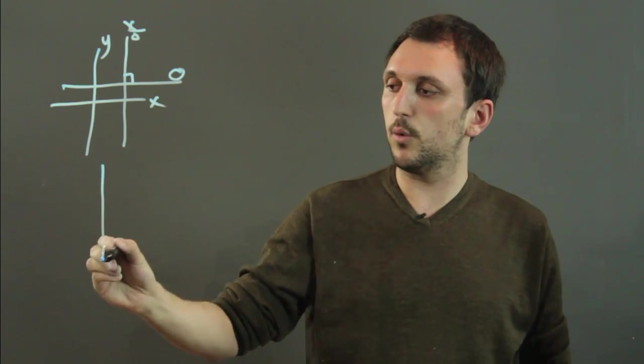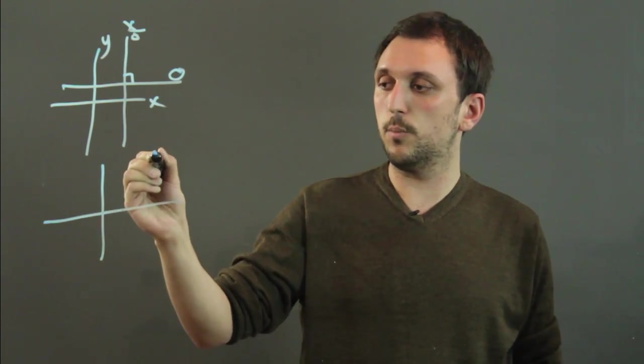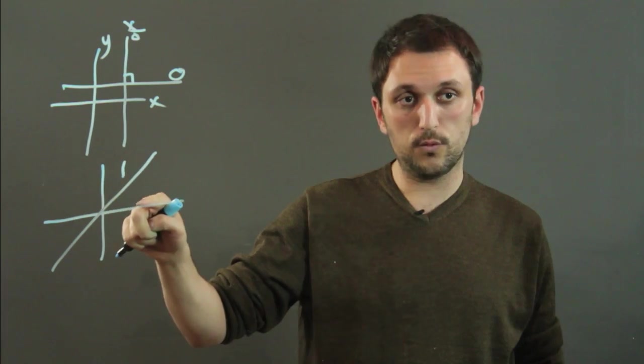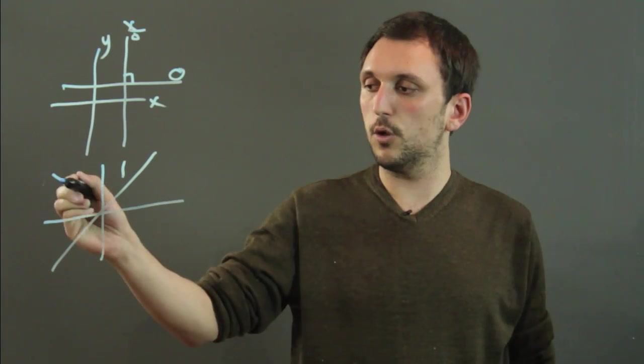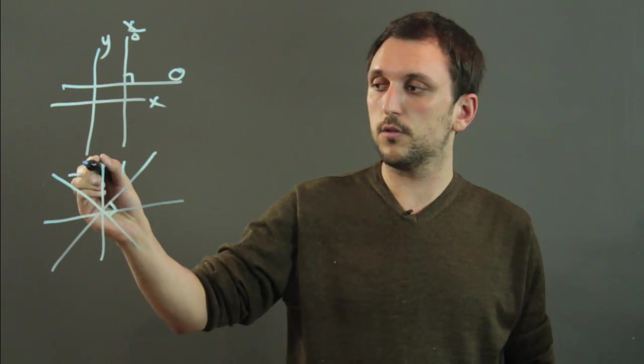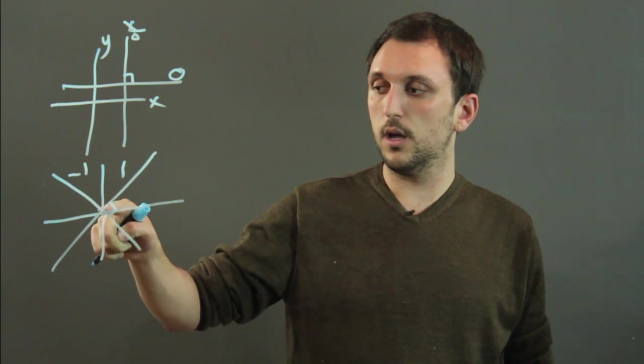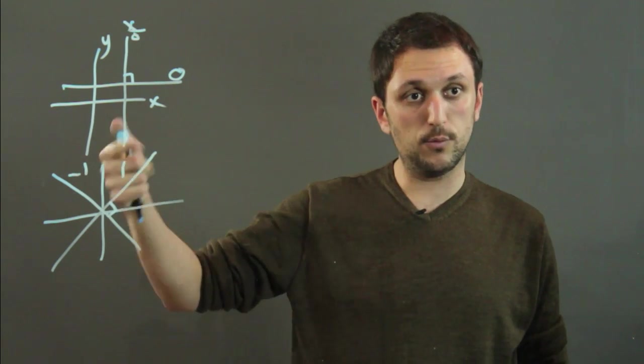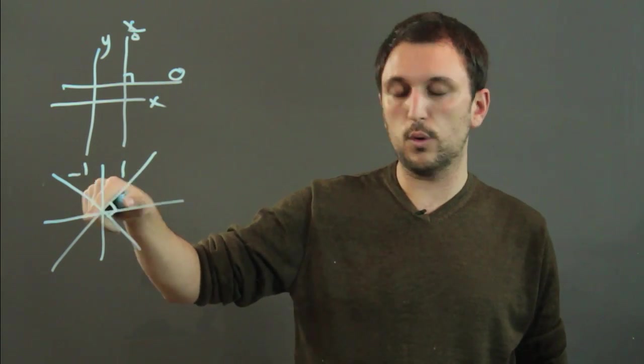Now another one to look at on a coordinate plane is a slope of 1, which is moving over 1 and up 1, and a slope of negative 1, which again these are perpendicular, slope of negative 1, which is going back over 1 and up 1. So that would be a change in y over a change in x of negative 1 over 1.